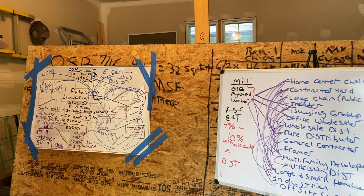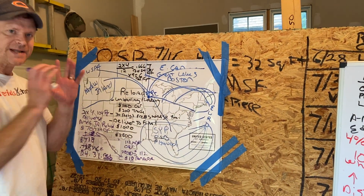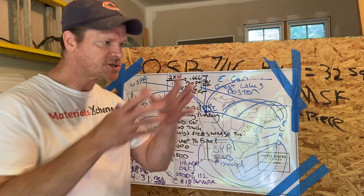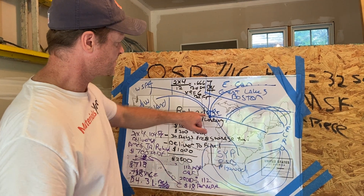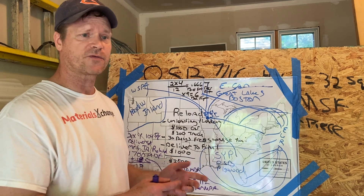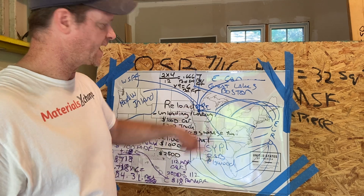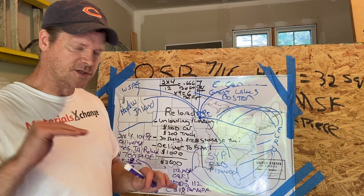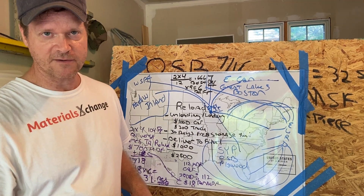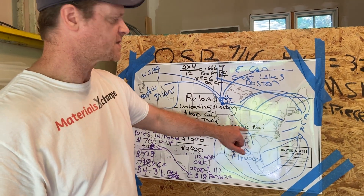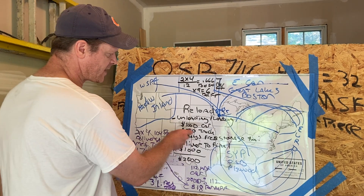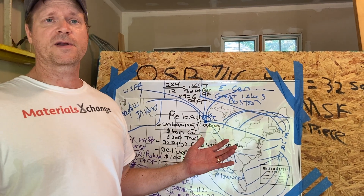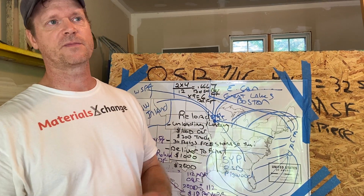Now let's talk about reloading. A reload is simply a facility in North America or Canada where you bring in large amounts of lumber, unload them, break them up, and ship them in smaller amounts on a truck. So let's say you're in Ames, Iowa and you've never bought a carload of lumber — you just bought trucks because you don't have a rail siding. You can call a reload facility in, say, Des Moines, Iowa and ask about their charges. They have an unloading and a loading charge — let's say $1,000 a car. There's 30 days free storage, then a charge after that. They also have a delivered-to-final rate if they do their own trucking, or you can use a third-party logistics provider. Let's say $1,000 haul within 100-150 miles of that location.